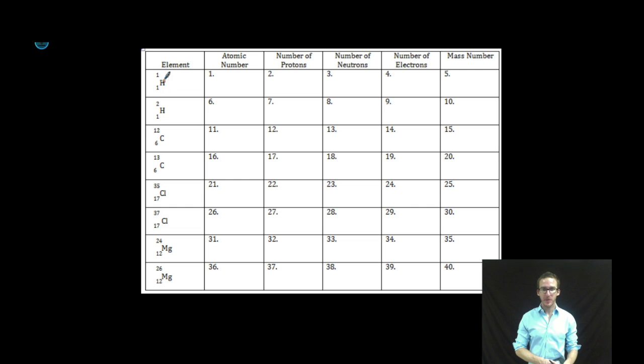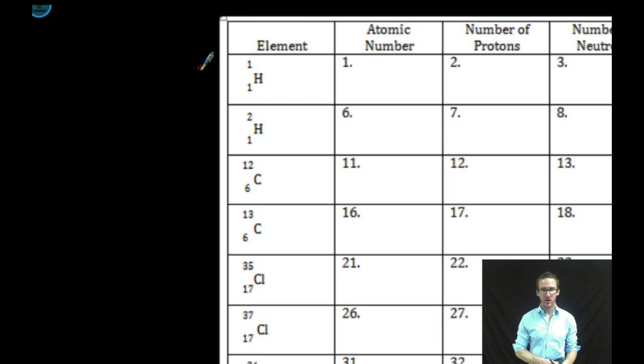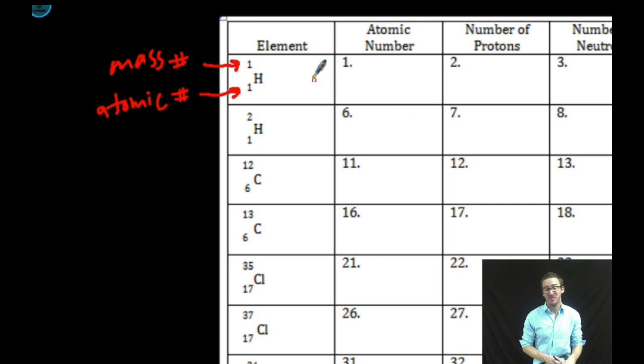Now we'll start at the top here with this isotope hydrogen-1. Remember at the top you'll have your mass number, at the bottom you'll have your atomic number. And when we name the isotopes, it's simply saying the name of the element followed by its mass number. So we're talking here about hydrogen-1. The atomic number is 1. Remember that the atomic number tells us the number of protons.